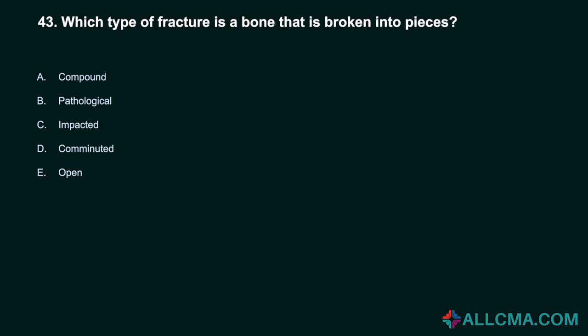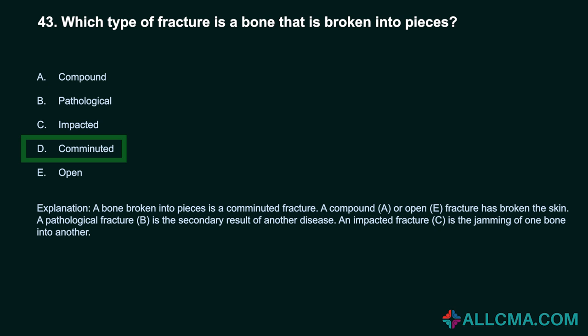Question 43: Which type of fracture is a bone broken into pieces? a) compound, b) pathological, c) impacted, d) comminuted, e) open. Correct answer: D, comminuted. A bone broken into pieces is a comminuted fracture. A compound or open fracture has broken the skin. A pathological fracture is the secondary result of another disease. An impacted fracture is the jamming of one bone into another.